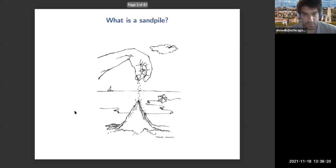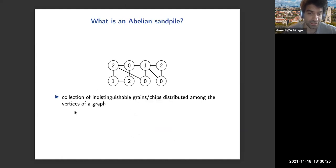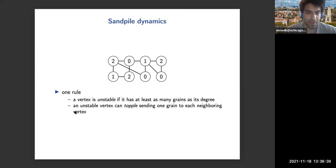A sandpile is just a collection of indistinguishable grains or chips distributed among the vertices of a graph. Precisely, it's a function from the set of vertices of the graph to the integers. There is exactly one rule: a vertex is unstable if it has at least as many grains as its degree, and an unstable vertex can topple, sending one grain to each neighboring vertex. In this sandpile here, there are two unstable vertices.